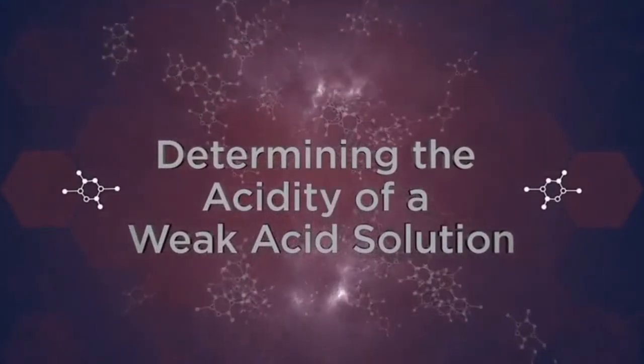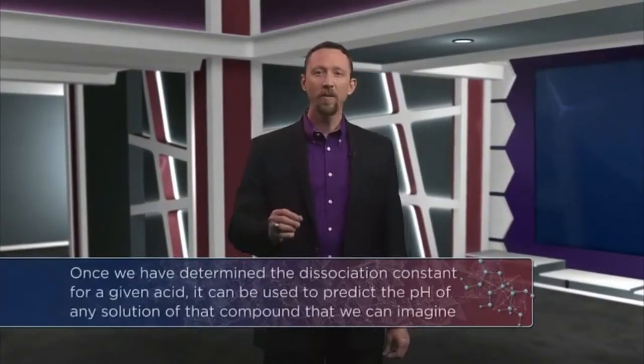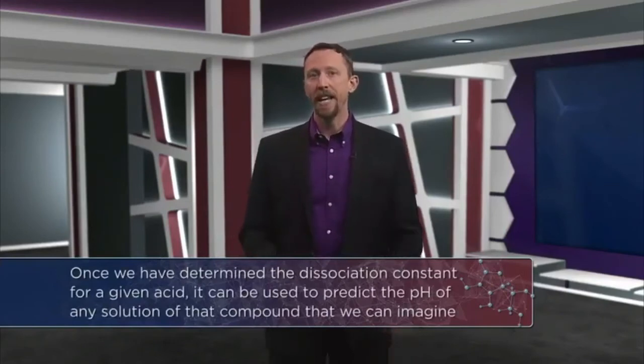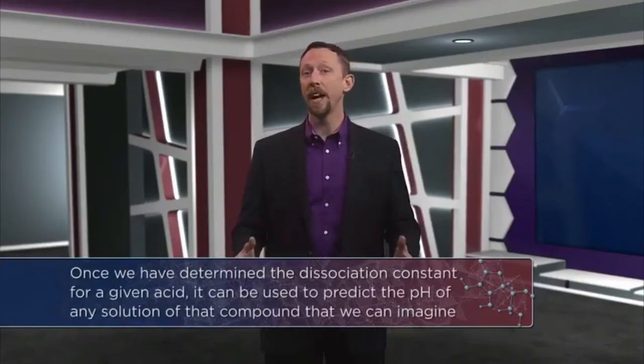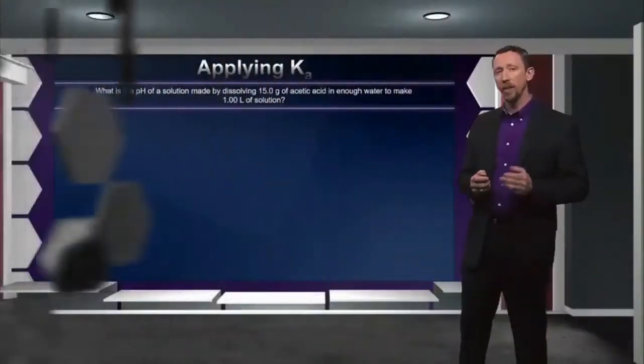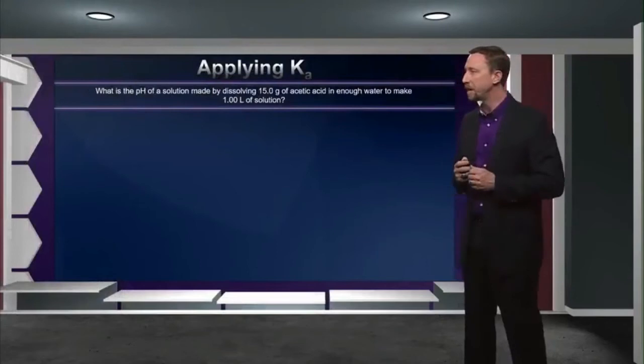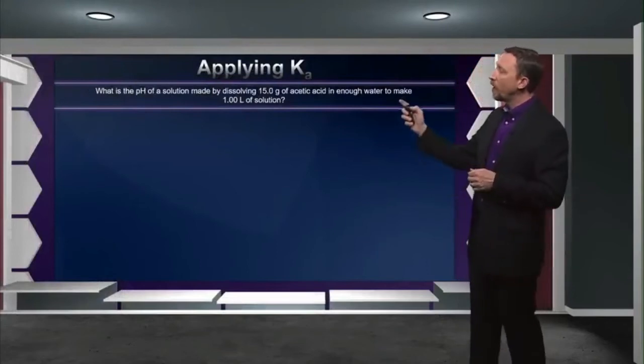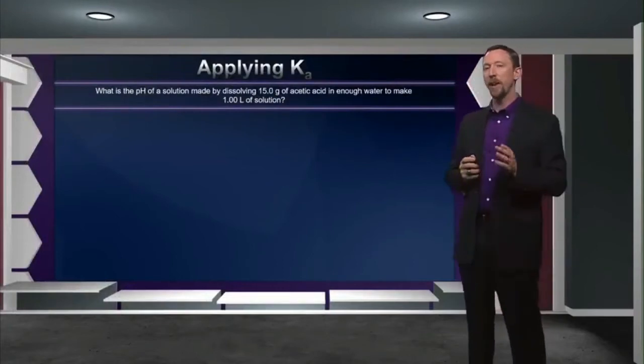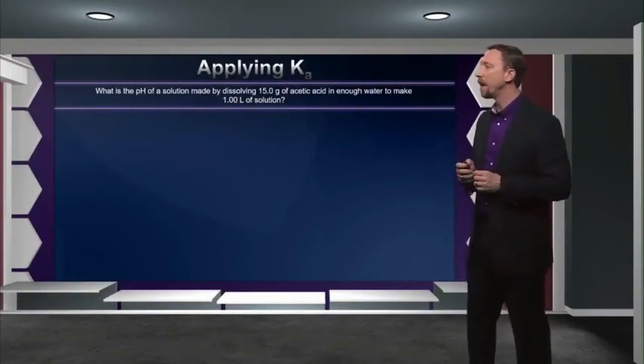Once we've determined the dissociation constant for a given acid, it can be used to predict the pH of any solution of that compound we can imagine. To do this, we simply reverse the equation we explored previously, making proton concentration the variable and using the predetermined Ka value to solve. Let's use acetic acid again. The question is: what is the pH of a solution made by dissolving 15 grams of acetic acid in enough water to make one liter of solution?